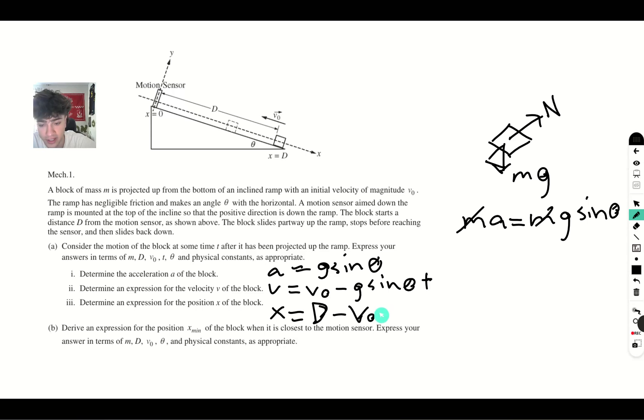So the acceleration is going to be positive. So we have x final is equal to x initial plus v initial time plus 1 half at squared when we know our a is g sine theta. So plus 1 half g sine theta t squared.